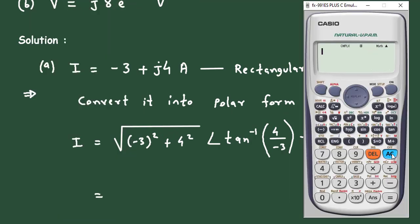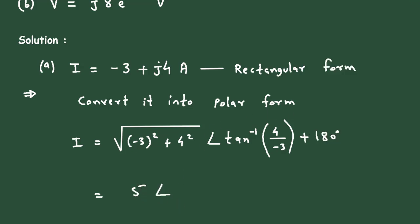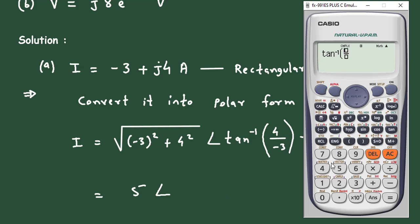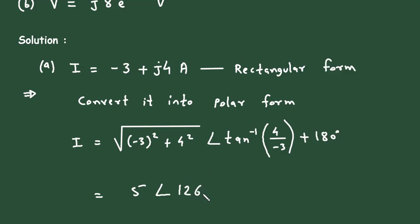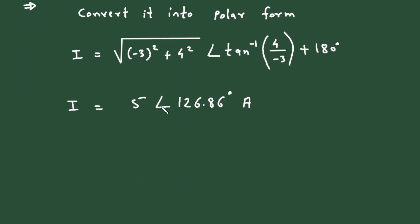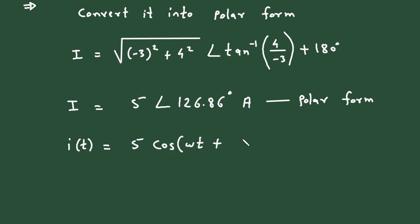Simplifying: the square root of minus 3 squared plus 4 squared equals 5, at an angle tan inverse of 4 by minus 3, plus 180 degrees, which gives 126.86 degrees. So i equals 5 at an angle 126.86 degrees ampere — this is the phasor in polar form. Converting to time domain: i(t) equals 5 cos(ωt + 126.86°) ampere.